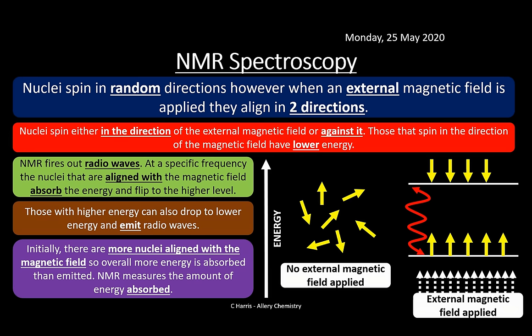The energy gap between the two levels changes depending on what the atom is bonded to — a carbon bonded to different neighbours will have a different gap. NMR is really more concerned with what's next door to the targeted atom than the atom itself. It's detecting the environment of the atom — we're opening this box slowly, step by step.